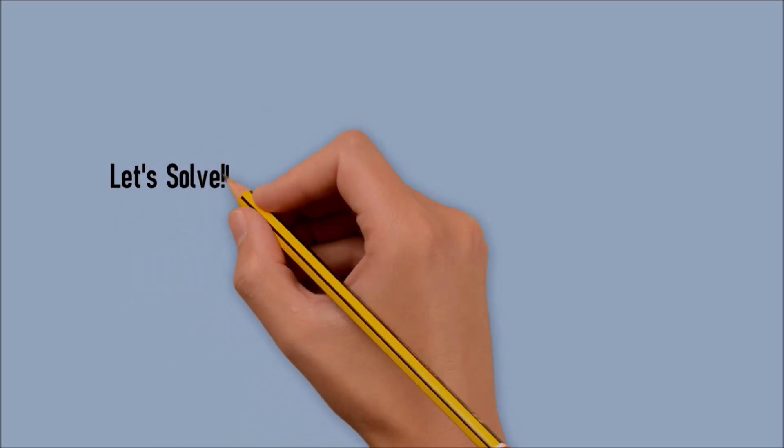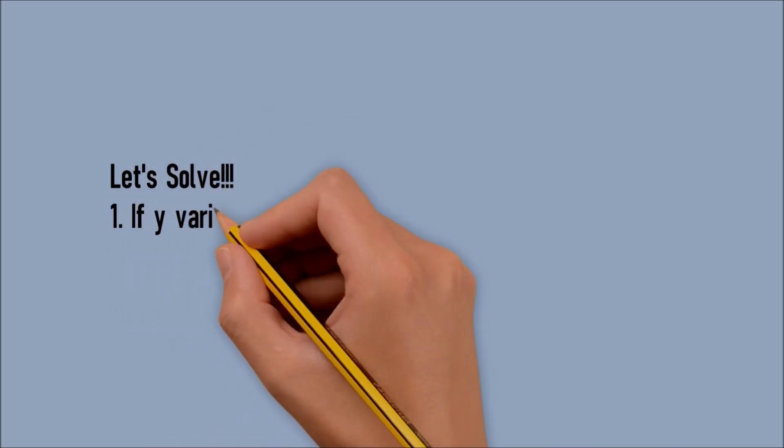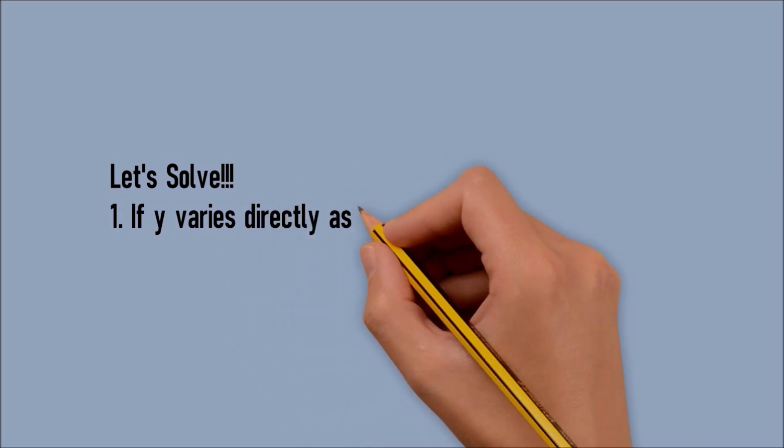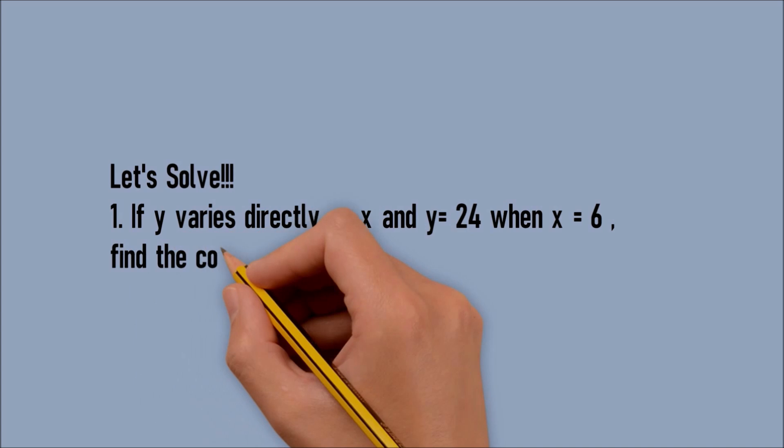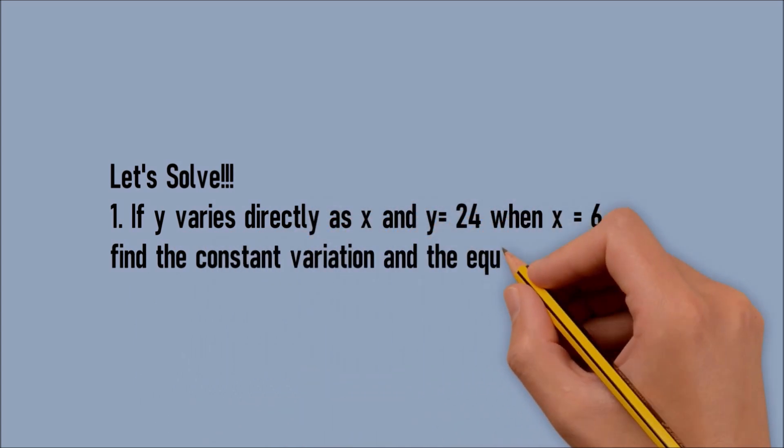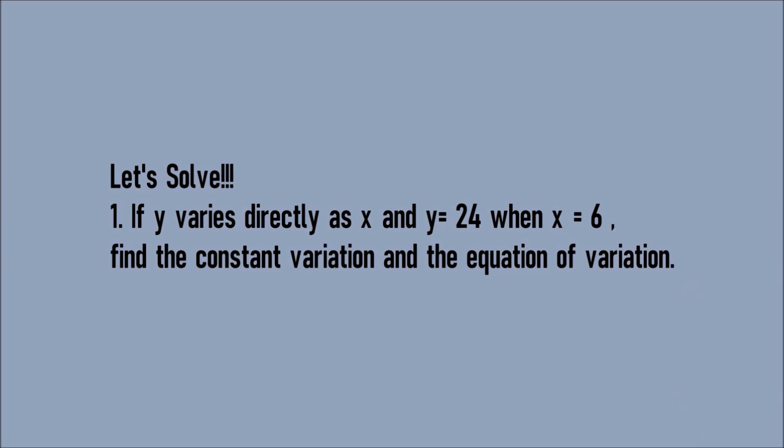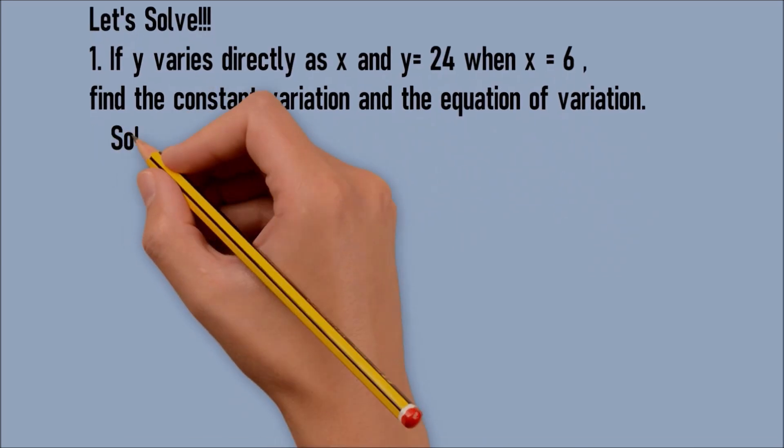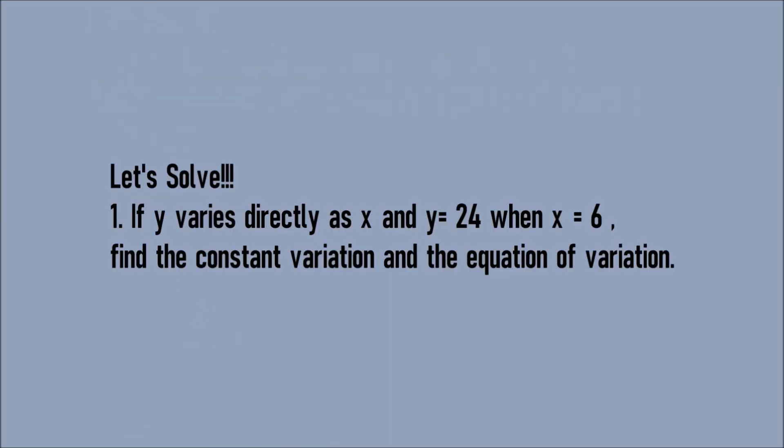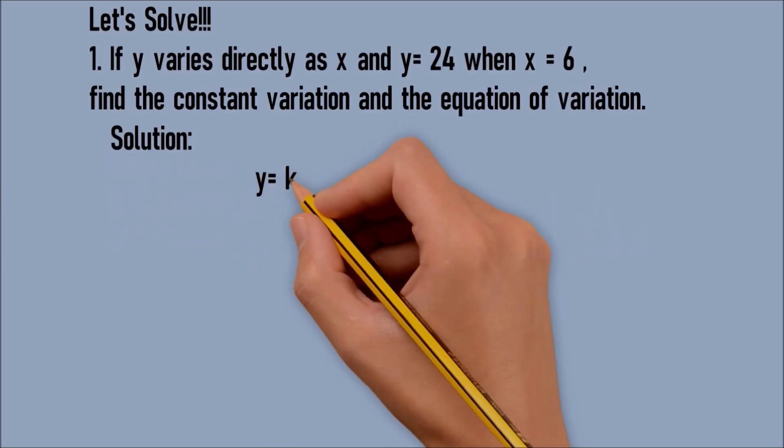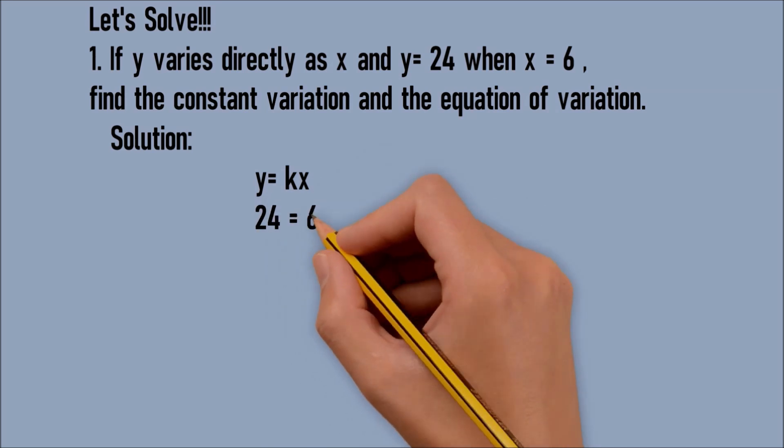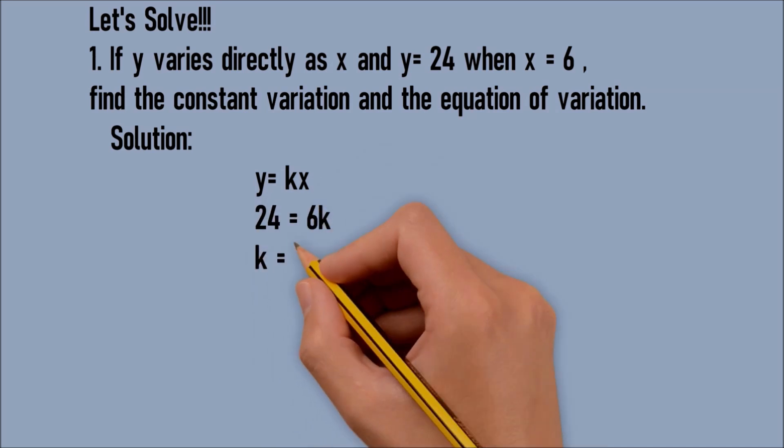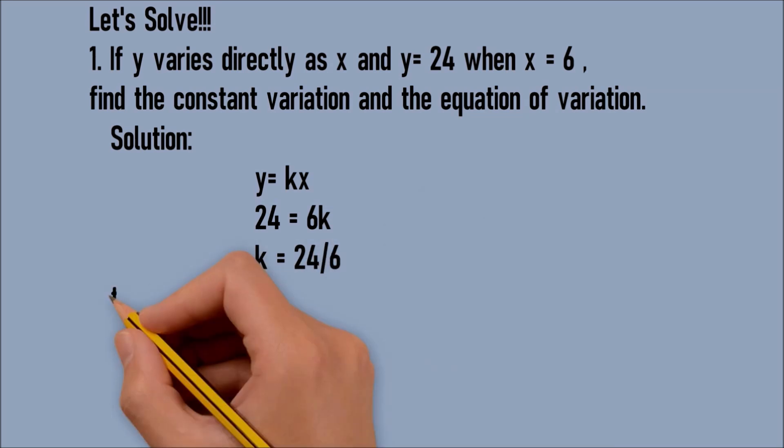Let's solve the problem. Number 1. If y varies directly as x and y is equal to 24 when x is equal to 6, find the constant of variation and the equation of variation. For the equation for this problem, let y is equal to kx. Then substitute the value of y is equal to 24 and x is equal to 6.